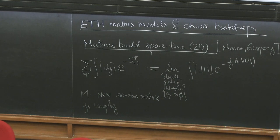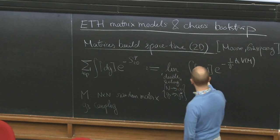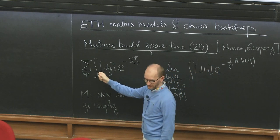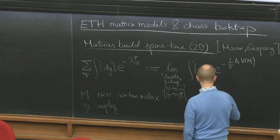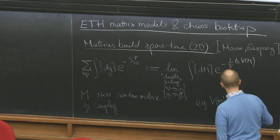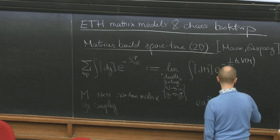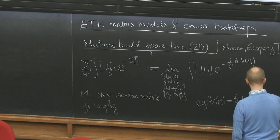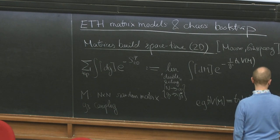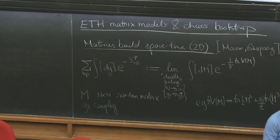The idea of this double scaling limit is that it produces a continuum version of a two-dimensional geometry, and the matrix integral then implements something like the path integral with a sum over topologies. For example, V of M — trace V of M — could be something like trace of one-half M squared plus G3 times trace M cubed divided by three. You could have other polynomials here and they equally make sense.